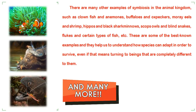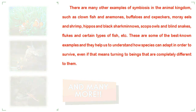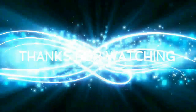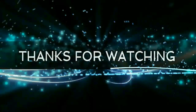There are many other examples of symbiosis in the animal kingdom, such as clownfish and anemones, buffaloes and oxpeckers, moray eels and shrimp, hippos and black shark minnows, scops owls and blind snakes, and flukes with certain types of fish. These are some of the best-known examples, and they help us understand how species can adapt to survive — even if that means turning to beings completely different from them. That's all about symbiotic relationships and their types. Thanks for watching — don't forget to like, share, and subscribe for more upcoming updates.